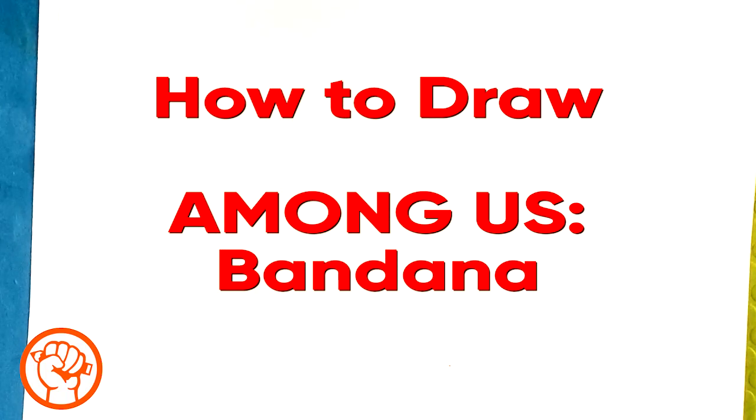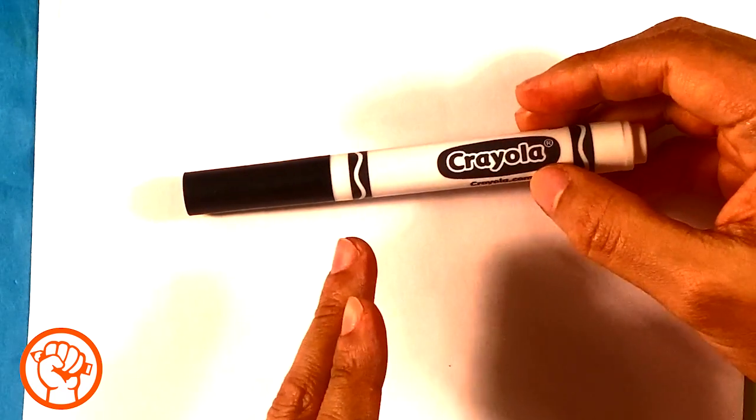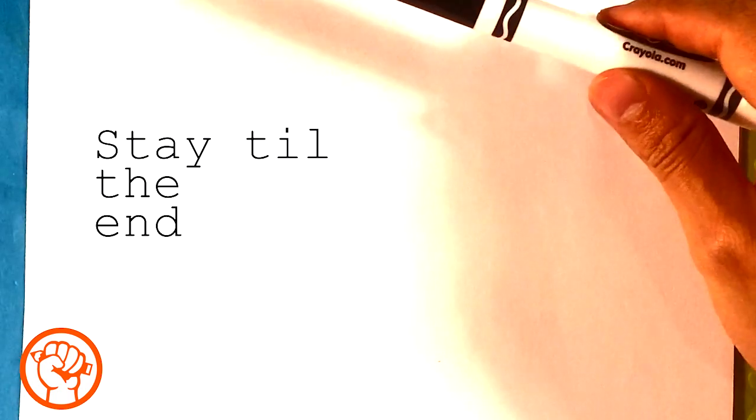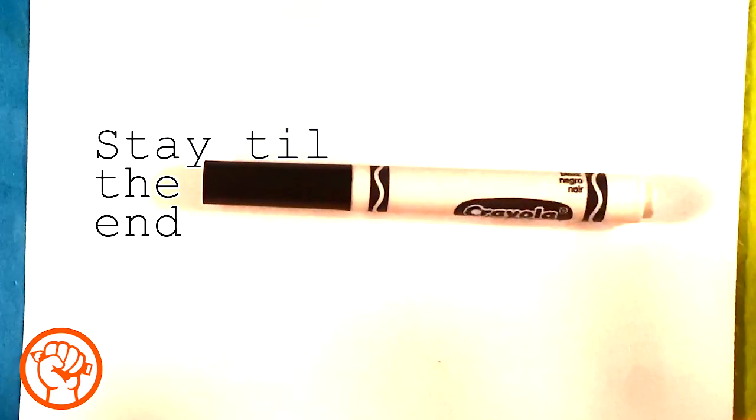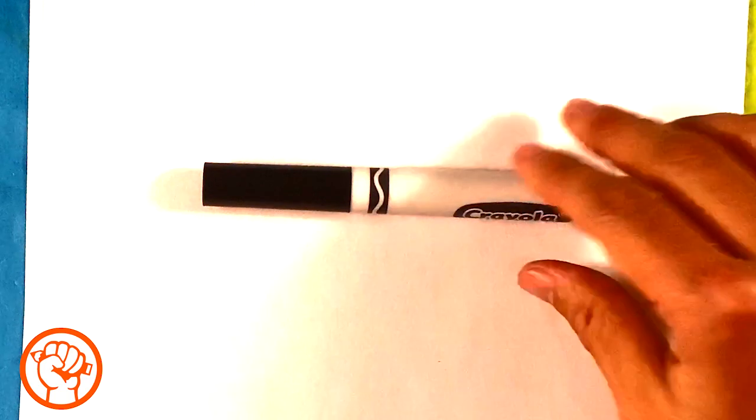Hey guys, what's up? Today we're going to go over how to draw an Among Us crewmate with a black bandana. It's going to be real simple, easy, and for beginners. I'm going to be using this Crayola brand marker and regular printing paper. You can use anything you want - a pencil, a pen, doesn't matter. If you want a supply list, there's a link in the description.